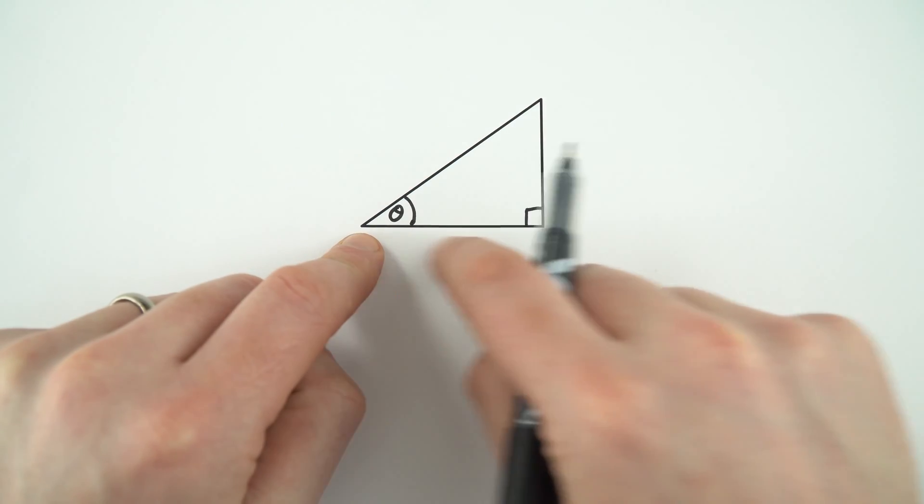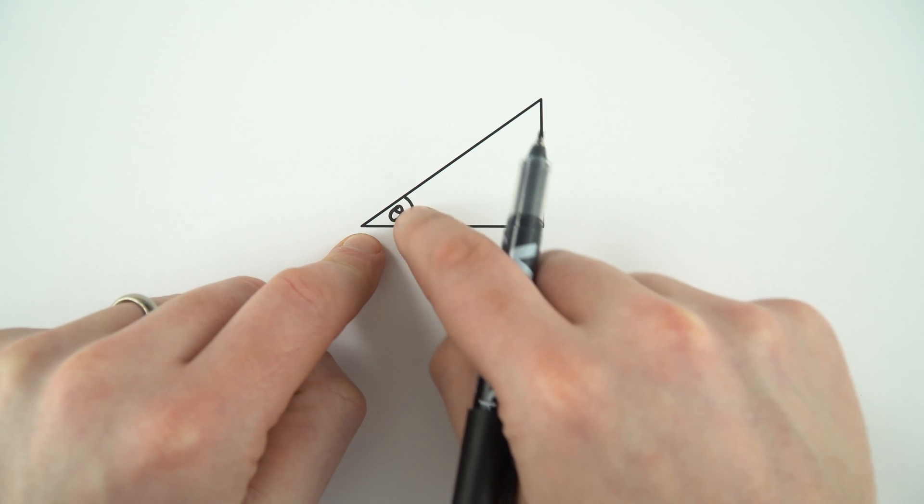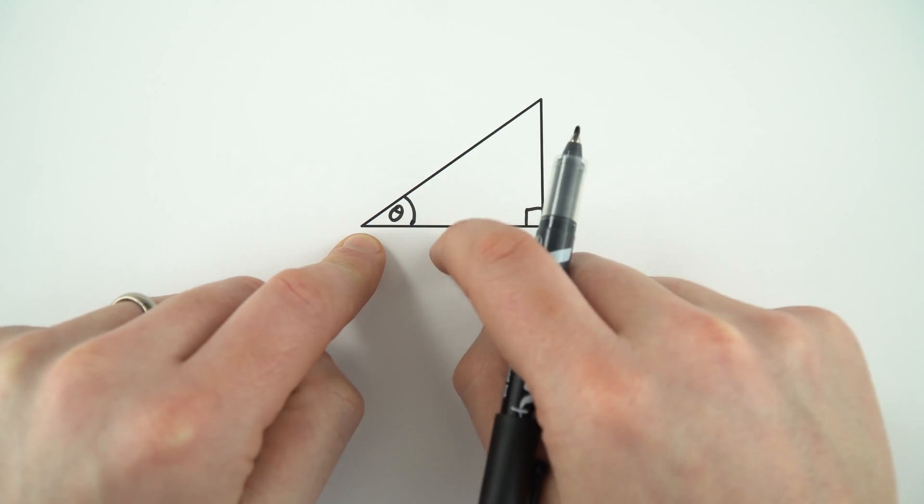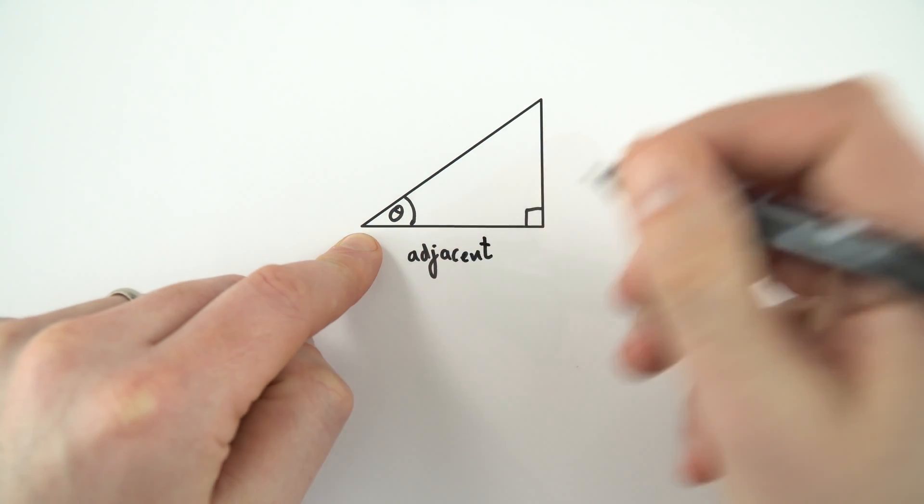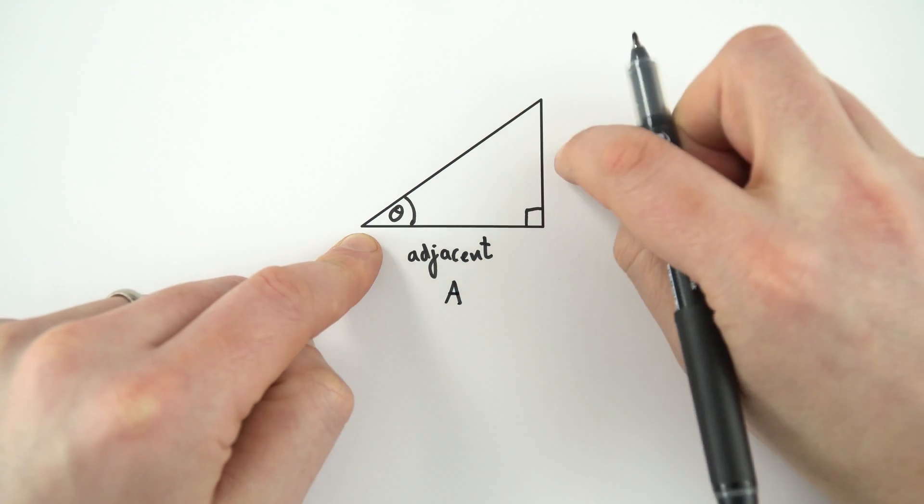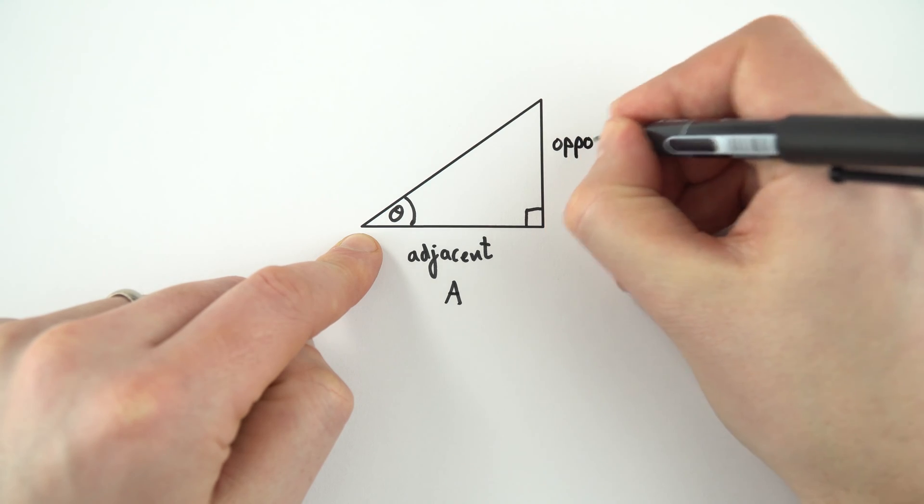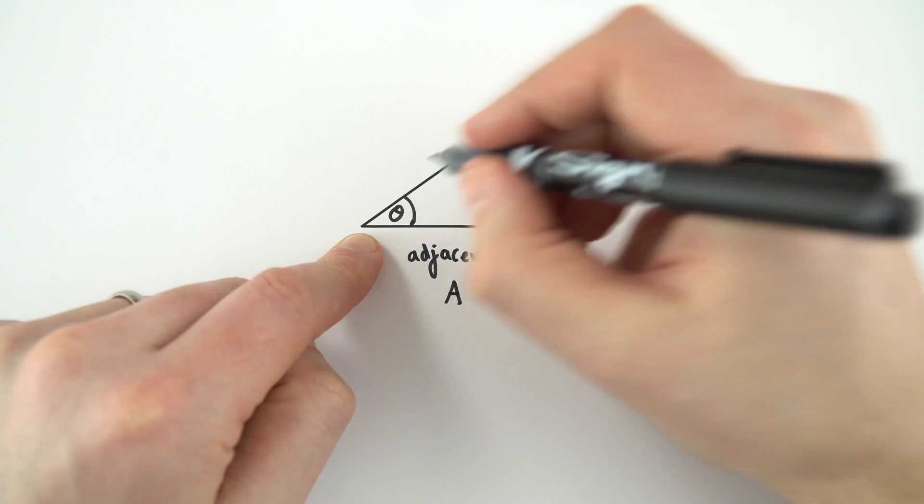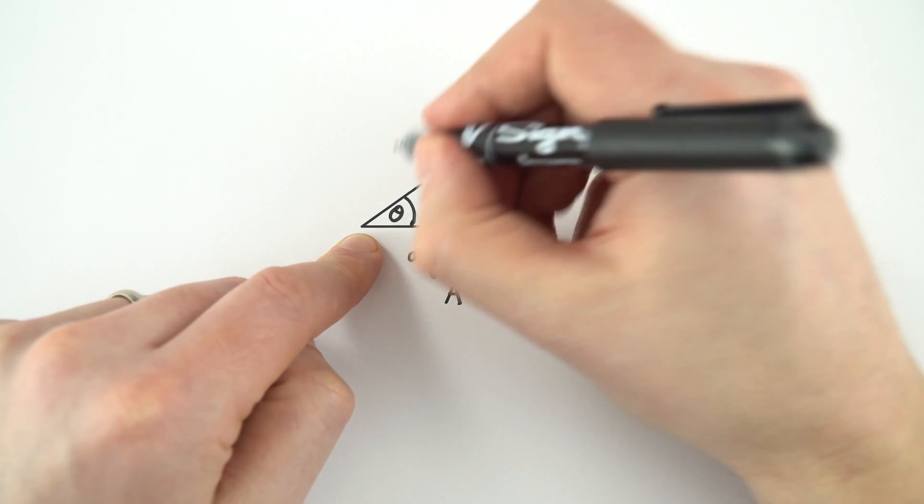Now I'm going to label the side which is adjacent to this angle as the adjacent side. I'm just going to label that as capital A. This side over here, because it's opposite to the angle, is known as the opposite side. And finally the longest side is what's known as the hypotenuse.